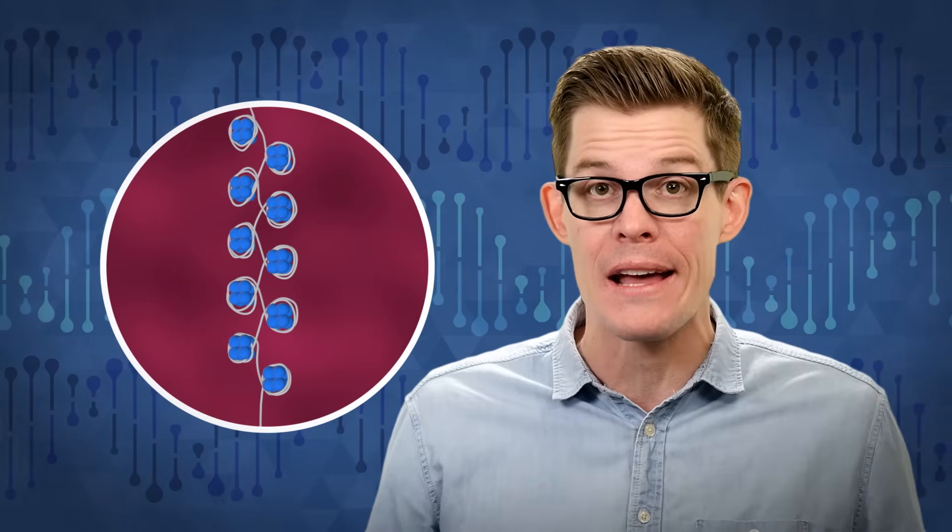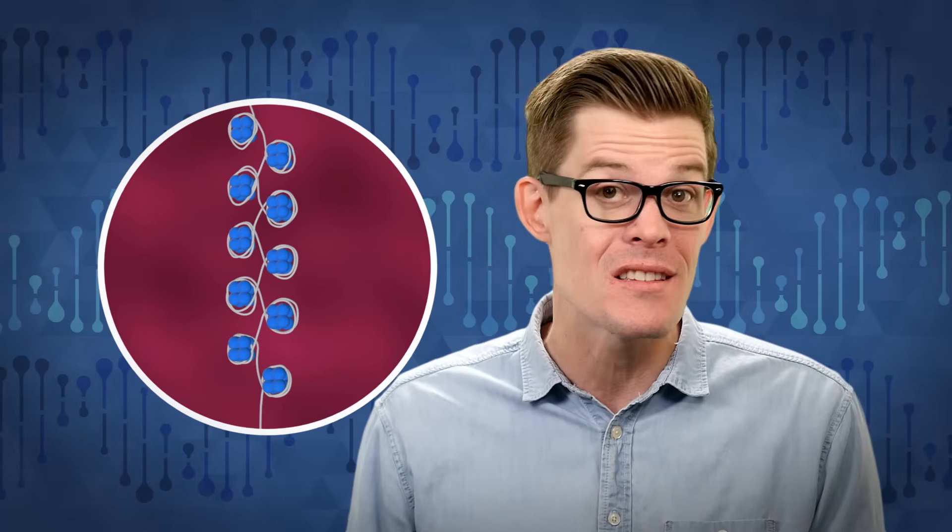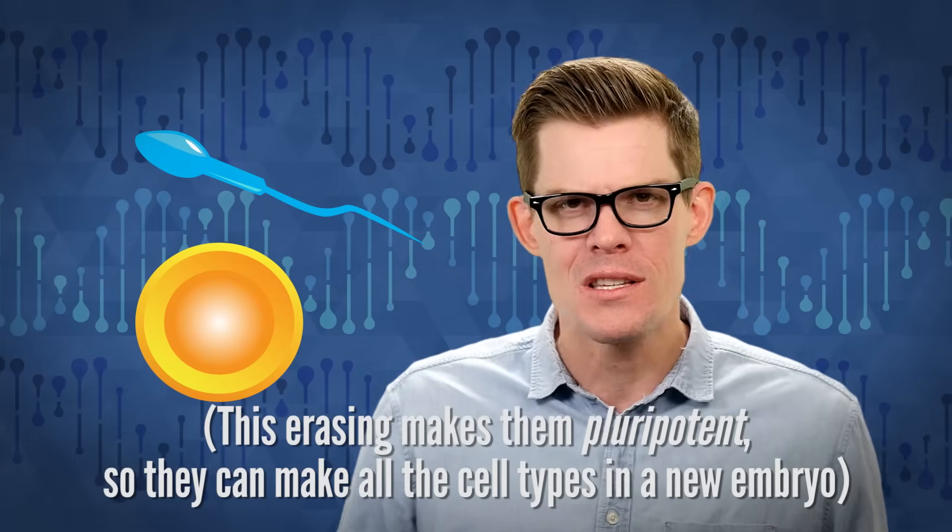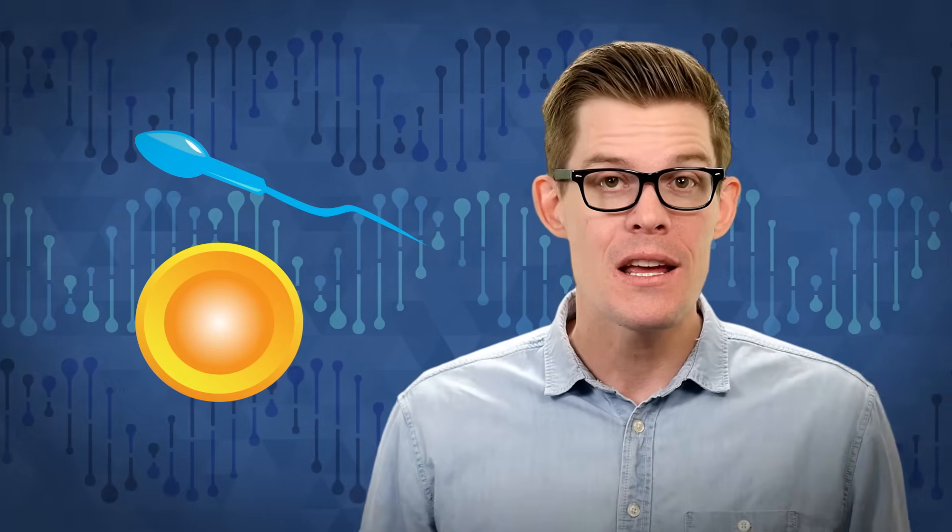There's just one catch. This shouldn't be possible. Just hours after an embryo is conceived, its chemical flags are erased, so all the cell types in the new body can be built from a blank slate, and cells destined to become sperm and eggs get erased a second time. At least that's what scientists thought. For epigenetic inheritance to work, some flags must sneak through without being reset.